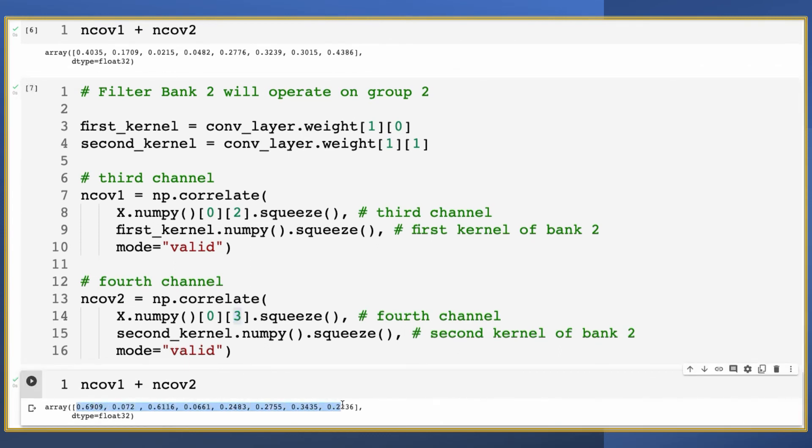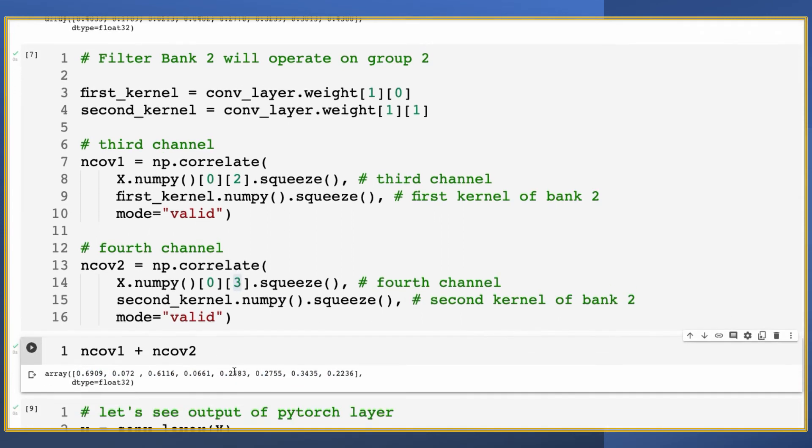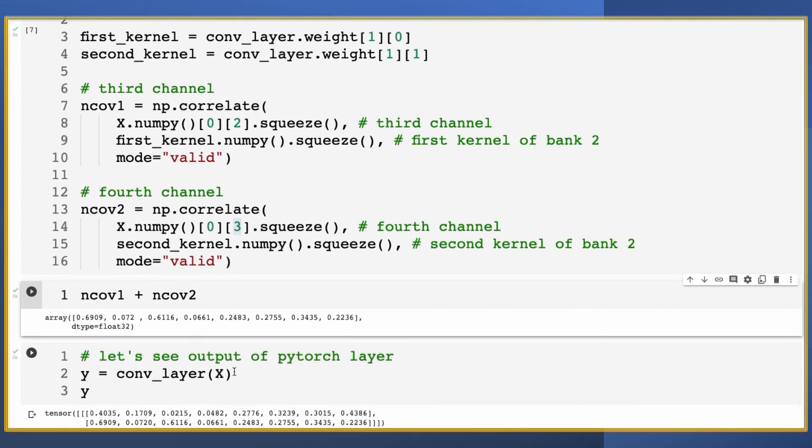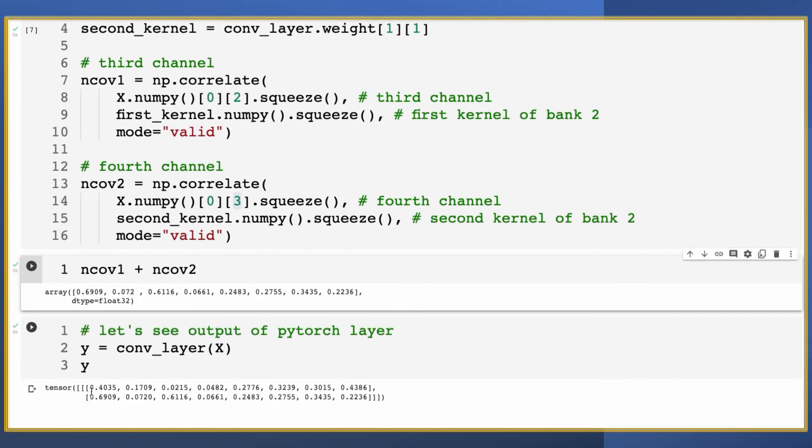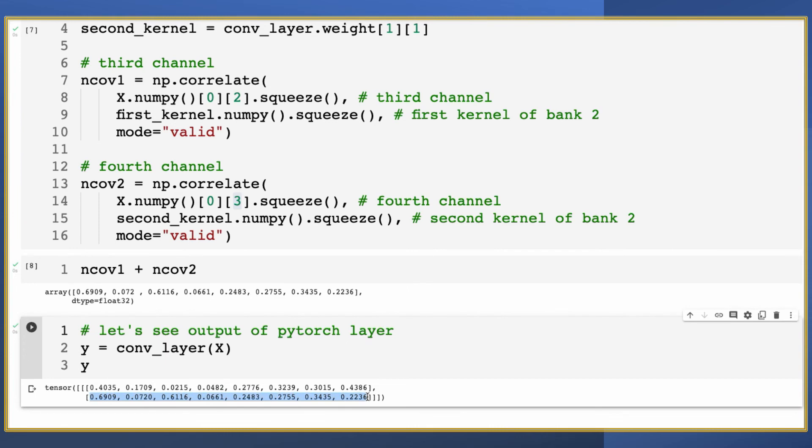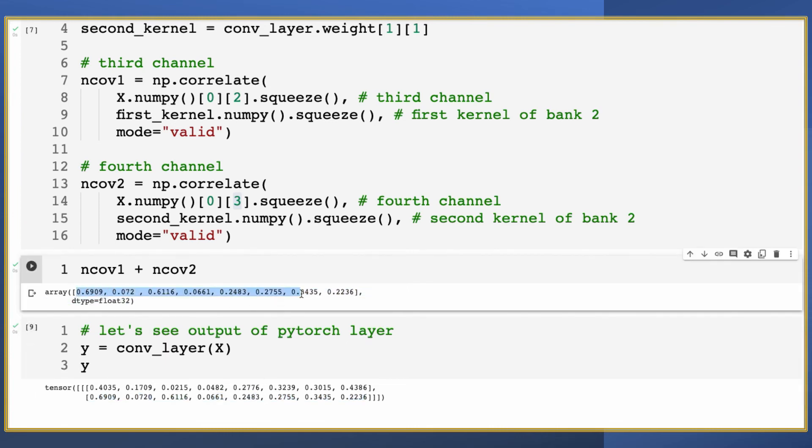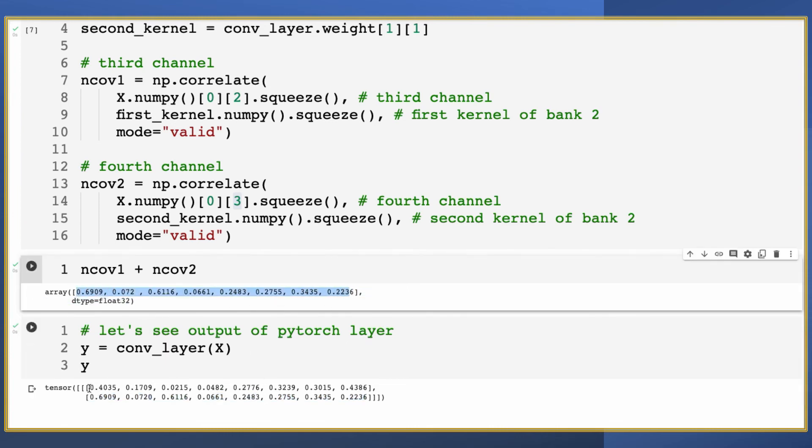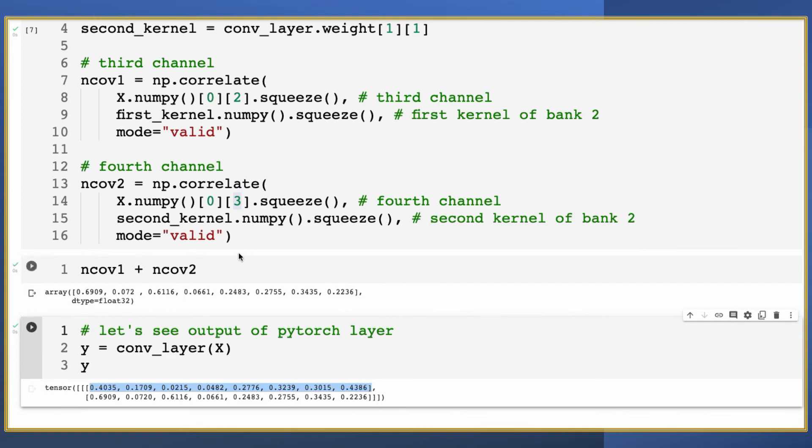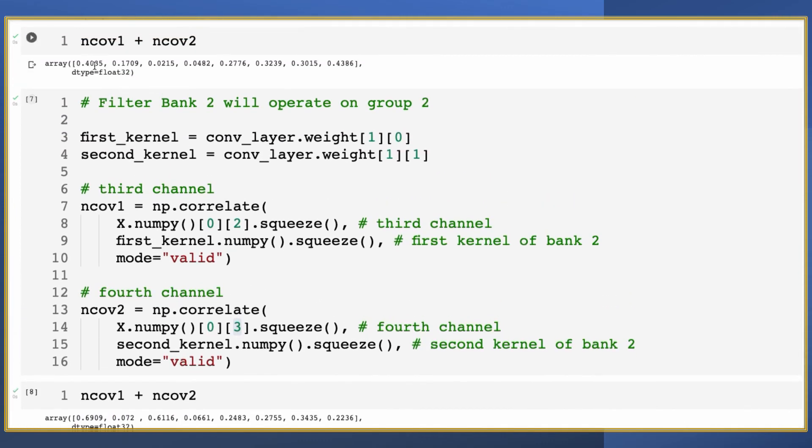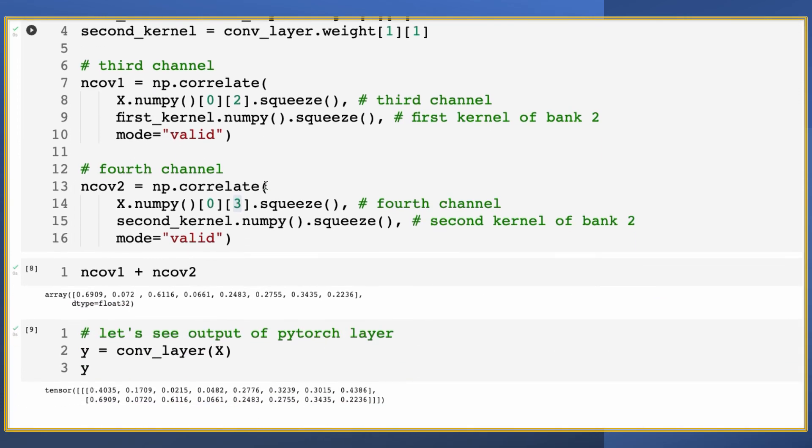Let's verify the result by using what PyTorch convolution layer is outputting. As you can see, it is the same as what we have computed manually using the numpy API, which means our understanding is correct. And we have the mechanics behind the group convolution nailed down.